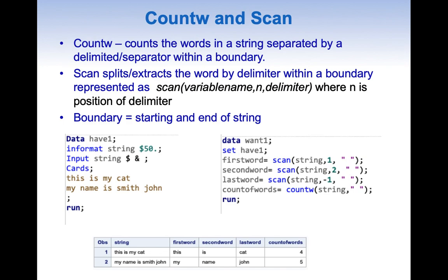For this topic we need to understand two functions. The first one is COUNTW and the second one is SCAN. The COUNTW function counts the words in a string separated by a delimiter or separator within a boundary. Whereas SCAN splits the word by delimiter within a boundary, and is generally represented as SCAN(variable_name, n, delimiter), where n is the position and the boundary is equal to the start or end of the string.